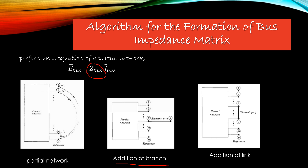Whenever you add a branch, a new node is formed. Before addition of bus Q, the size of Z_bus is M by M. If a new bus has been formed, the number of buses increases by 1, so the size will now be M+1 by M+1. Finding those added elements is the algorithm for the formation of the bus impedance matrix in the case of addition of branch.